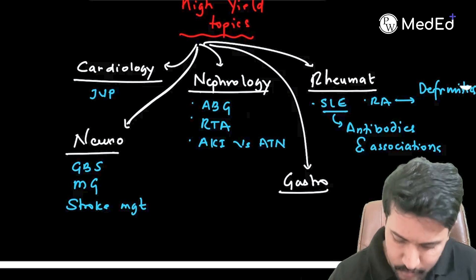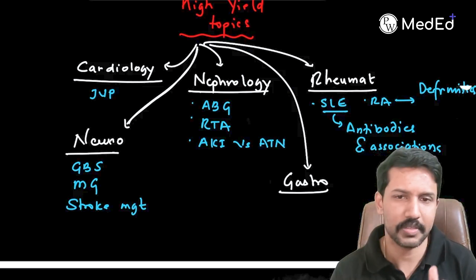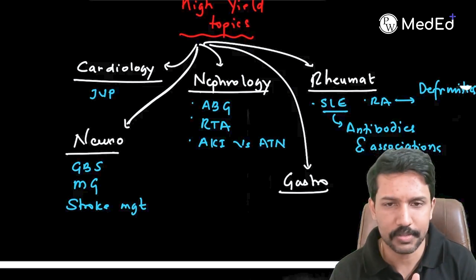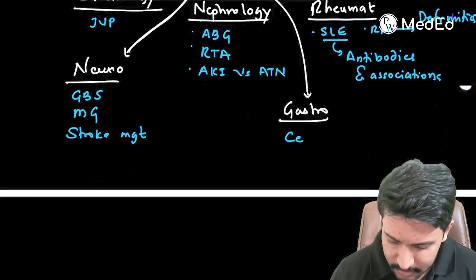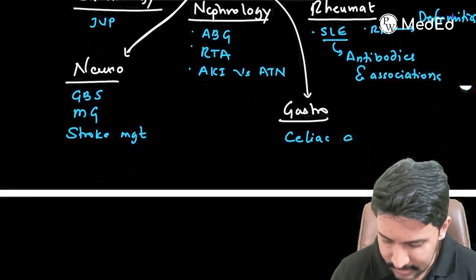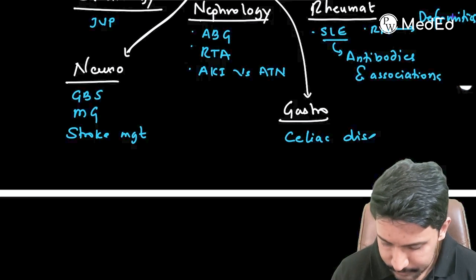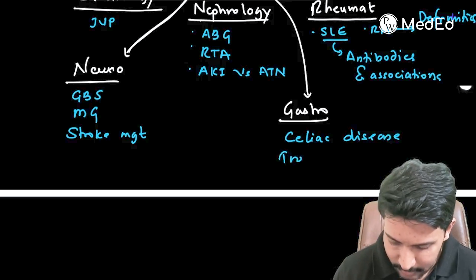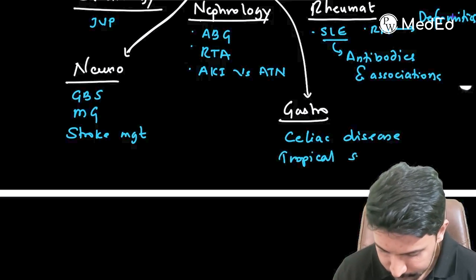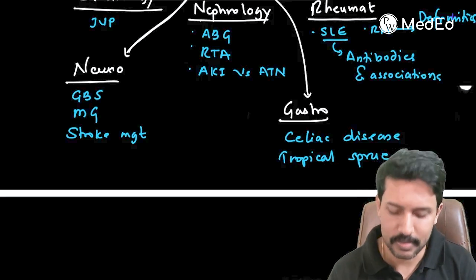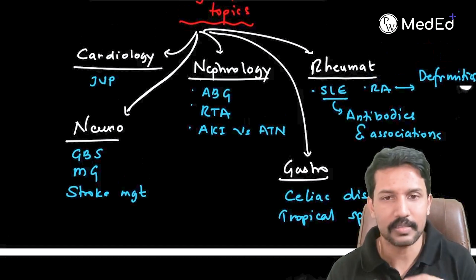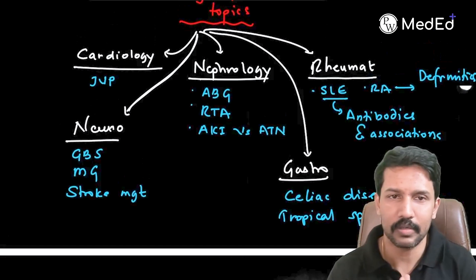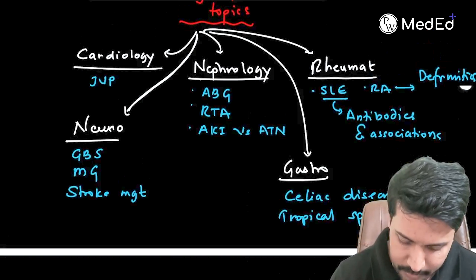From Gastroenterology, not much is tested from the medicine side specifically — most questions come from the surgical side. However, one topic that has been recurring recently is celiac disease and tropical sprue. The rest you will cover from Surgery, including the hepatobiliary and pancreatic diseases.